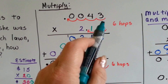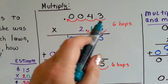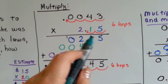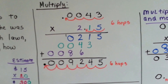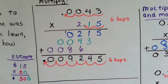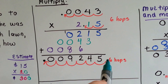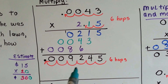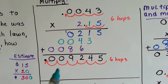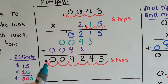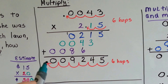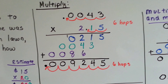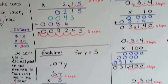So how many hops do we have? One, two, three, four, five, six — six total hops in the equation. So there are going to be six total hops in the answer: one, two, three, four, five, six. So our answer is going to have the decimal point over here. So easy to count the hops.